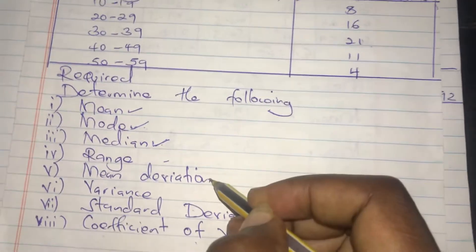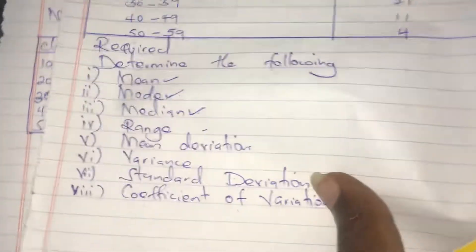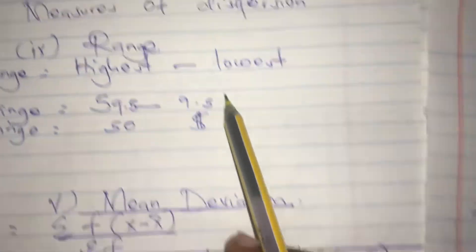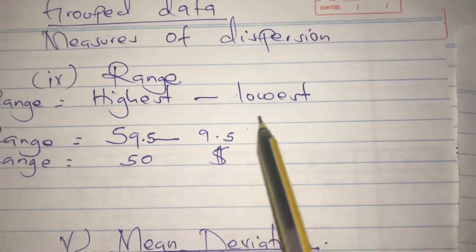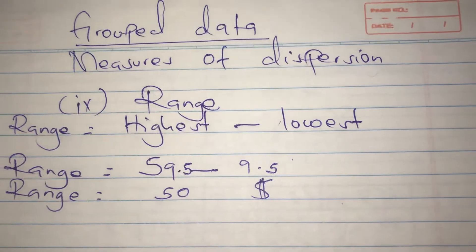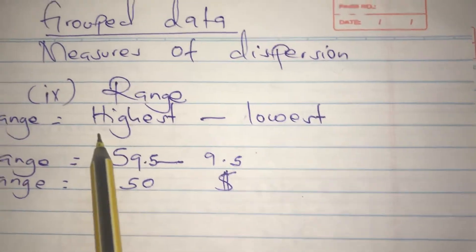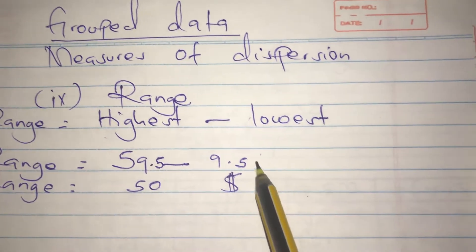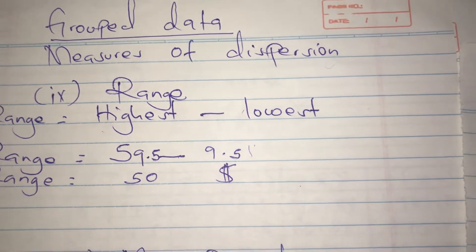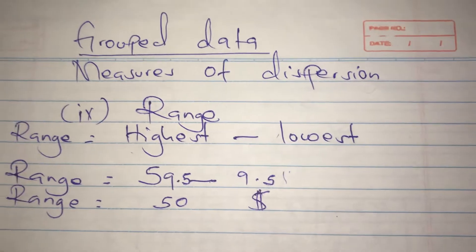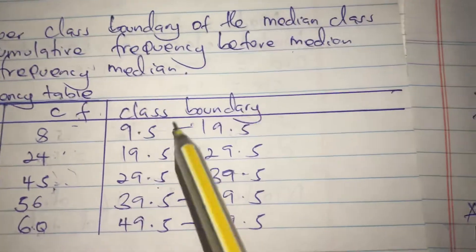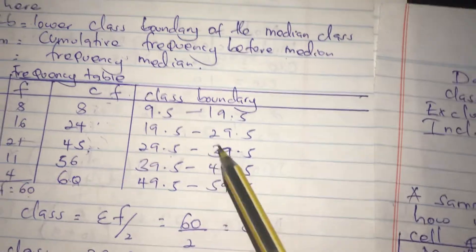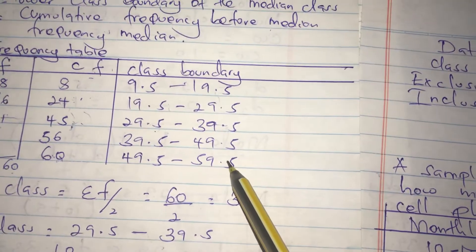Range shows the difference between the highest and the lowest figures. The formula for range is highest minus lowest — even for grouped data it doesn't change. This time around we are going to use the class boundary. Our lowest class boundary is 9.5 and the highest is 59.5.